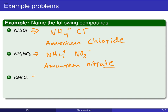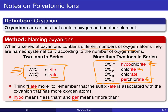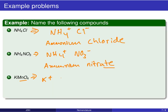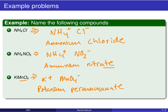The last example has a potassium ion, K+, associated with another oxyanion — MnO4−. Scanning through our list, MnO4− is permanganate. So K stands for potassium, and the ion is permanganate: potassium permanganate.